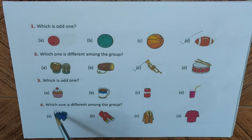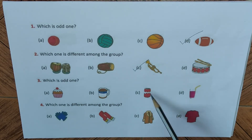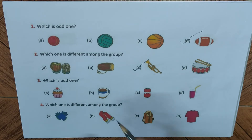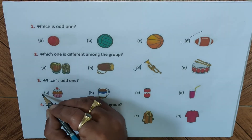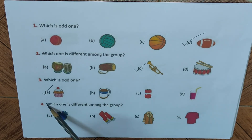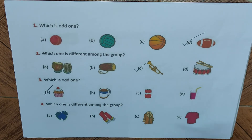Question three: which is the odd one out? We have a cupcake, a coffee mug, a cold drink can, and a juice glass. The coffee mug, cold drink can, and juice glass are all liquids we drink, whereas a cupcake is not a liquid — we eat it. So the cupcake is different.